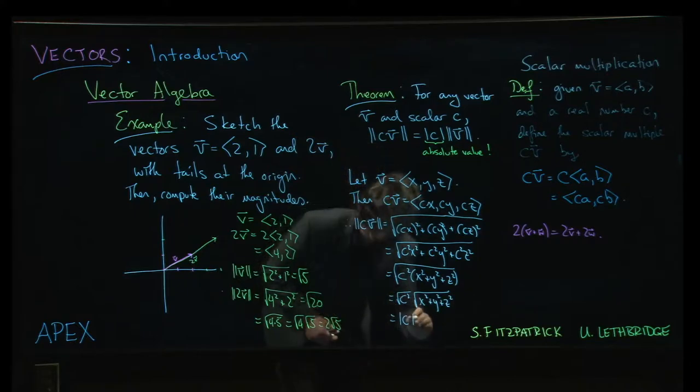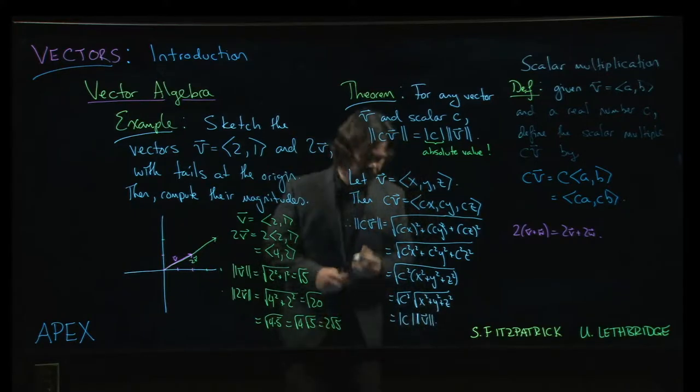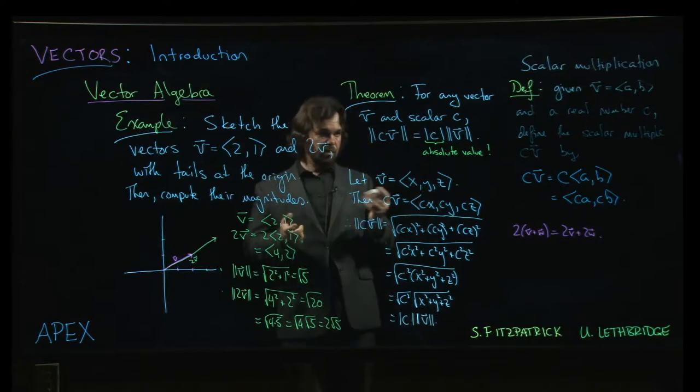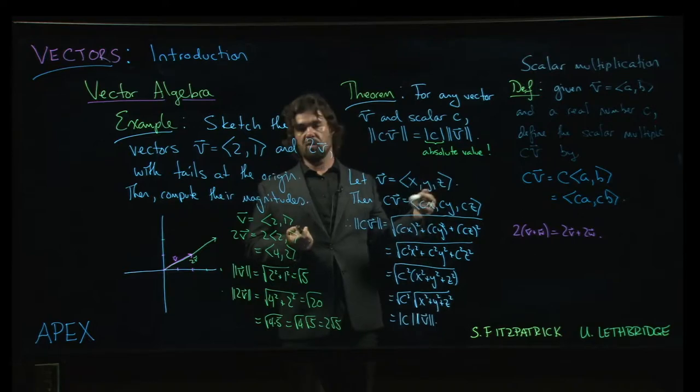And of course, the other part by definition is just the magnitude of v, right? So it's a useful result. This result really helps us understand exactly what's going on when we're doing a scalar multiplication. All right, so we're almost done with this section. One subject left to address, which is the subject of unit vectors. We'll get to that next.